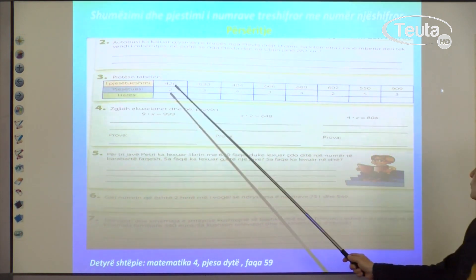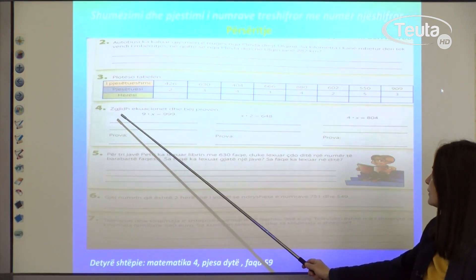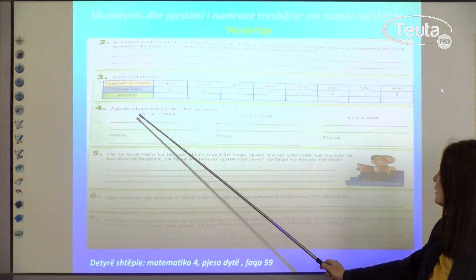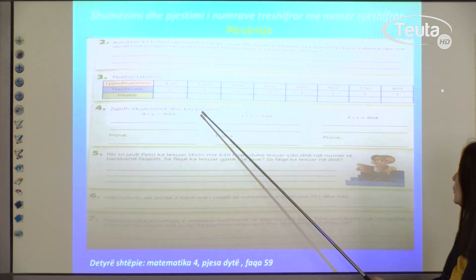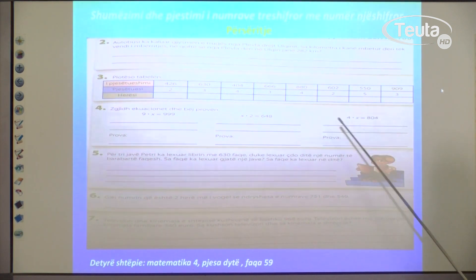You will work on these exercises independently. If you first work them in your notebook, then write the result, the quotient, in the textbook. Exercise 4: What does exercise 4 ask? Solve the equations and do the proof.